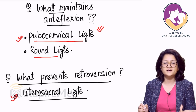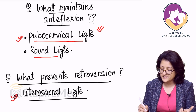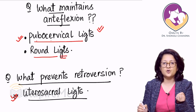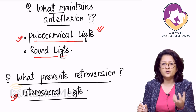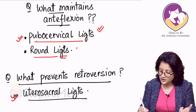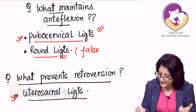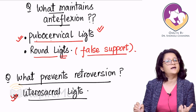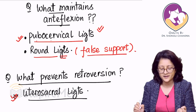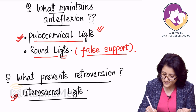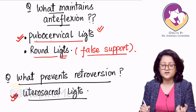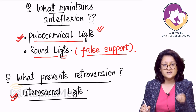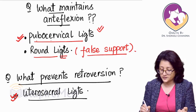Round ligaments are not true ligaments — they are just tubular structures, essentially a misnomer. The round ligament has no mechanical strength of its own, so it does not really contribute to any support structure. It is a false support. Pubocervical and uterosacral ligaments, however, have strong connective tissue providing real mechanical strength.